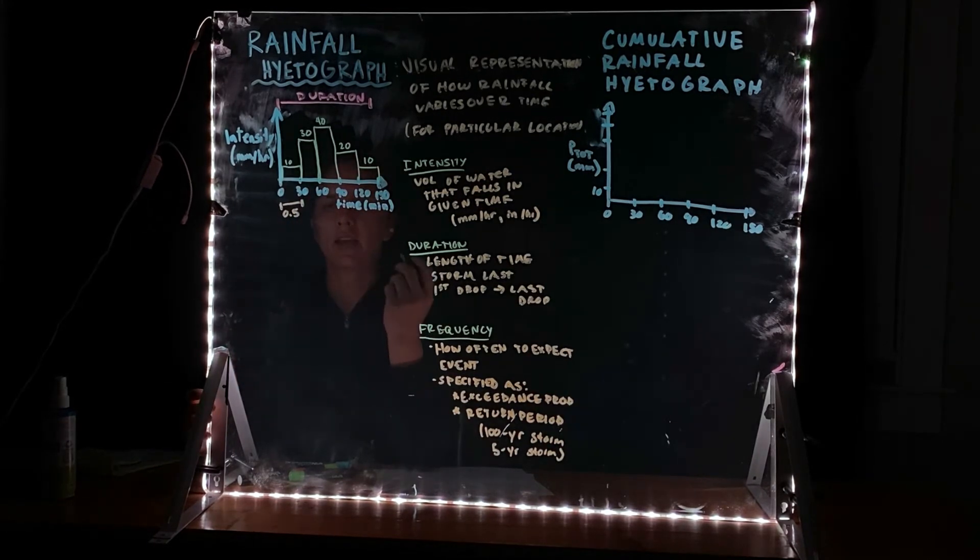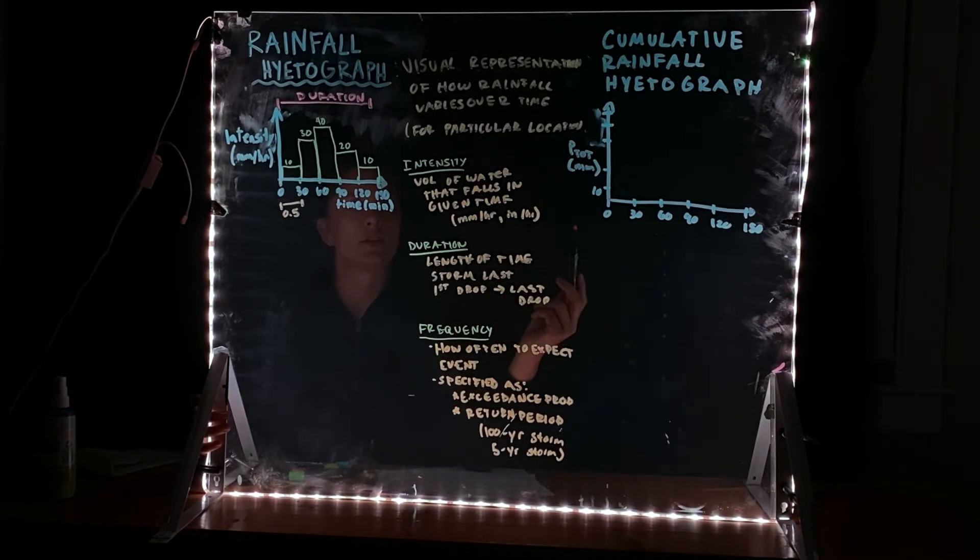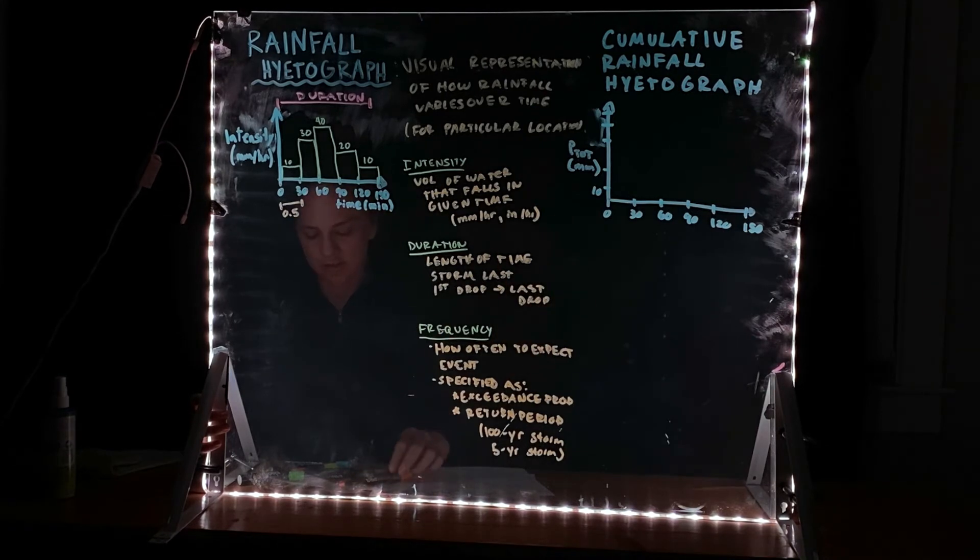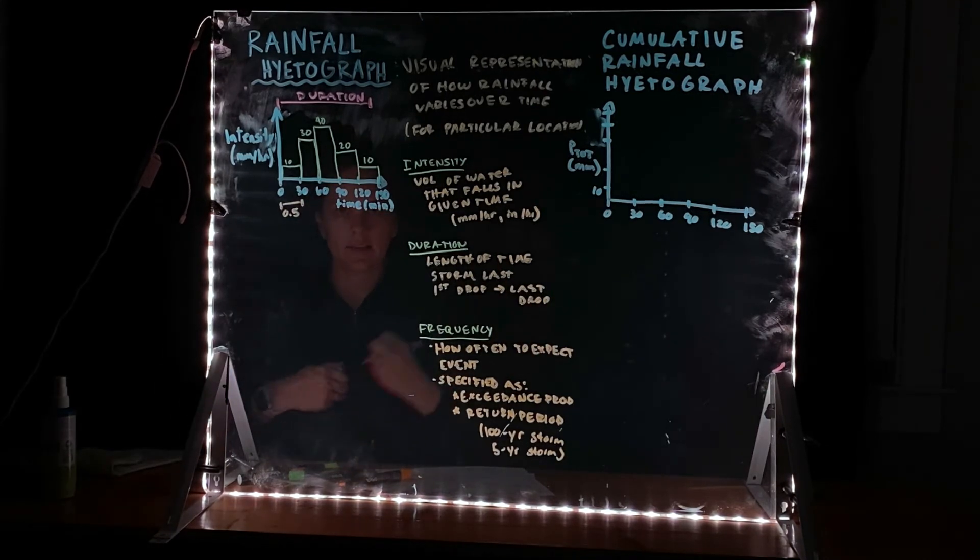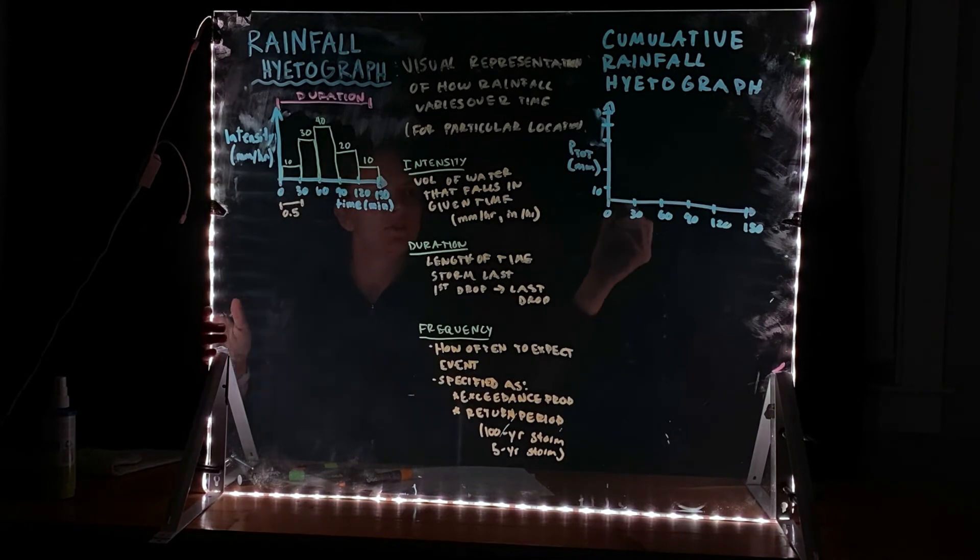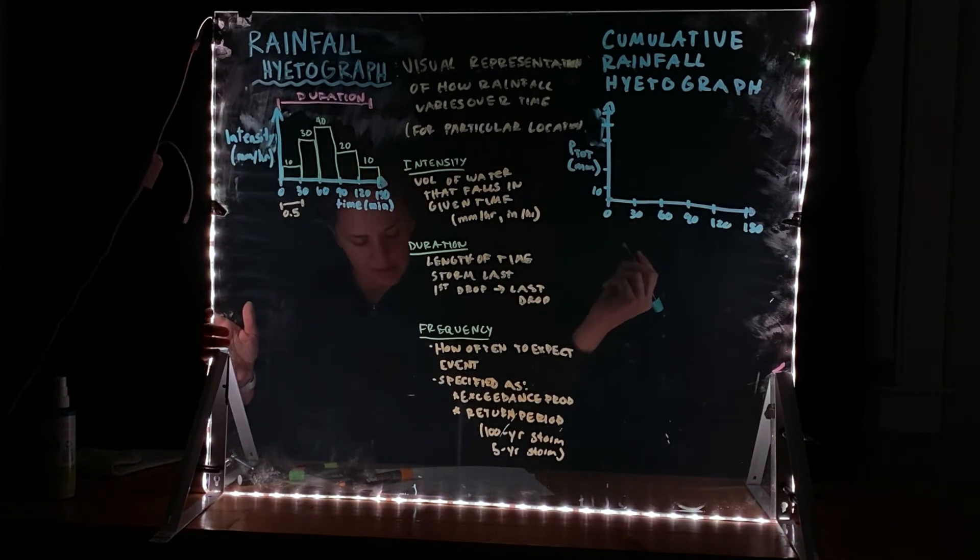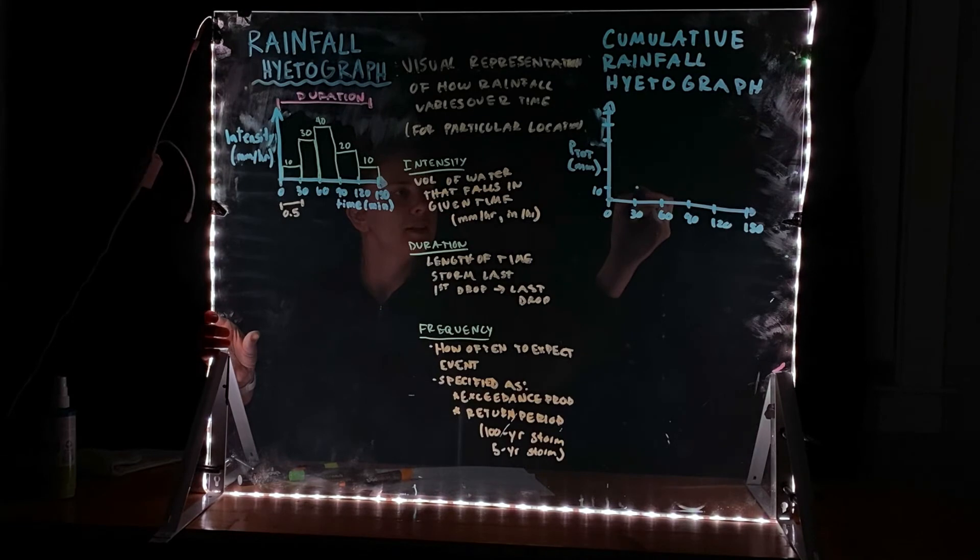So once you have a hyetograph, you can also represent it as a cumulative rainfall hyetograph. And what this shows is just, as the name implies, how much total rainfall has occurred at any particular point in the storm. So at zero, it's always going to start at zero in this particular case. After 30 minutes, we've reached this, actually this should be all of these should be divided by two. This is my bad.